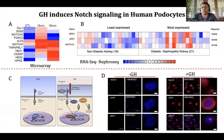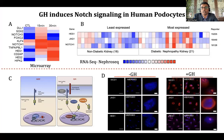We obtained human podocytes from Professor Wayne Salih from University of Bristol, and then we did unbiased microarray. When we performed the microarray, we found upregulation of Notch1 and Notch1 targets HES1 and HES2 in human podocytes treated with growth hormone for 30 minutes. We chose 30 minutes because it reflects the direct targets of growth hormone — a longer treatment would yield secondary gene responses. We also searched an open-source database from the University of Michigan and found that Notch1, its target HES1, and its ligand JAG1 were induced in diabetic nephropathy kidney specimens.